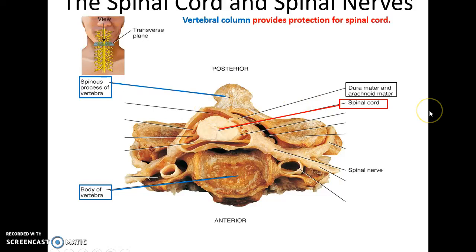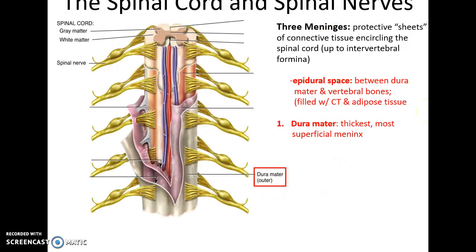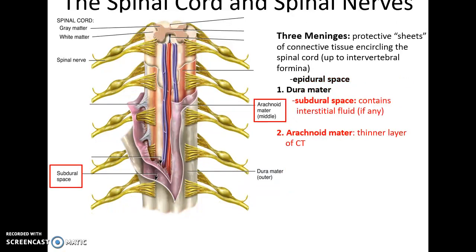Around the spinal cord you can see the dura mater and arachnoid mater, which have fused together. The spinal cord is surrounded by three protective sheets of connective tissue that completely surround it up to the intervertebral foramina. The first and most superficial is the dura mater. The dura mater is the thickest of the meninges, made up of dense irregular connective tissue, and also the most superficial in the vertebral canal. There is also an epidural space, which is everything between the dura mater and the vertebra themselves.